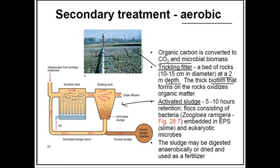After adding oxygen as bubbles, we have the settling tank. In the settling tanks, the sludge settles down. We call it activated sludge because some of the sludge — specifically the liquid portion of the sludge — is retreated back into the system.